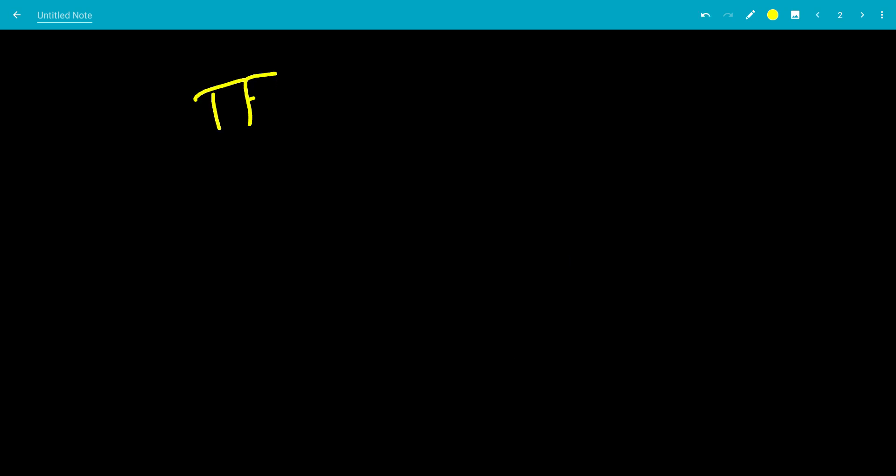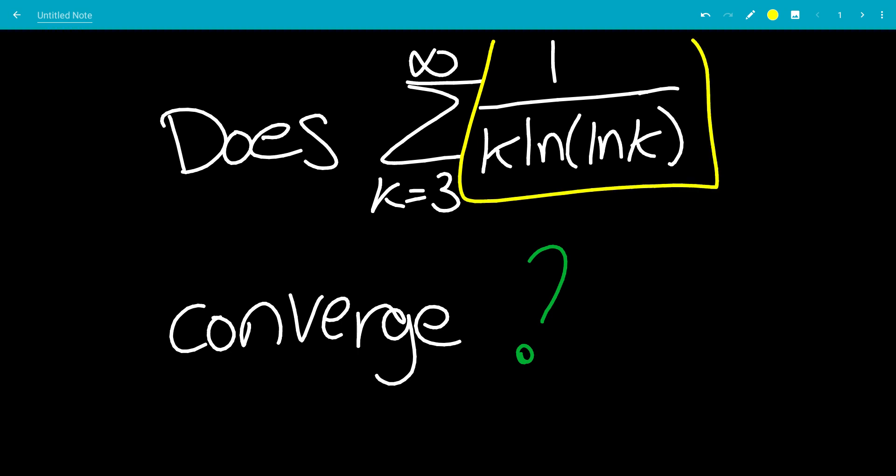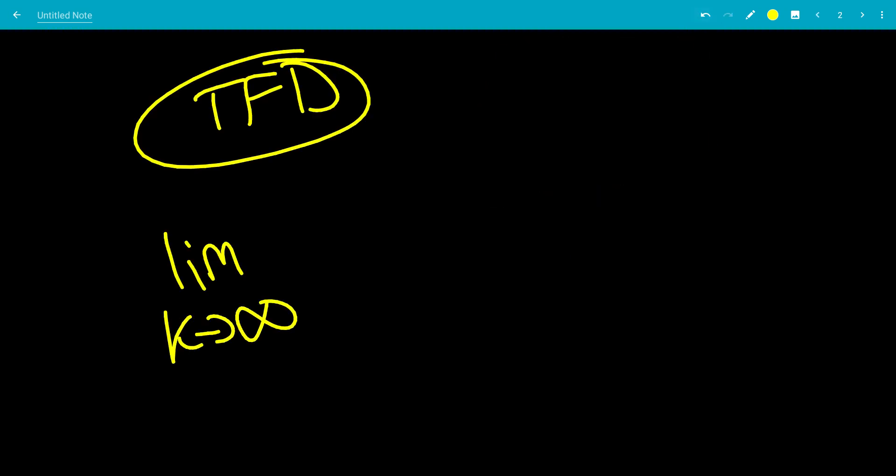We can first use the test for divergence to see if this works. So we do the limit from k goes to infinity of the inside, so that would be 1 over k times ln of ln of k.